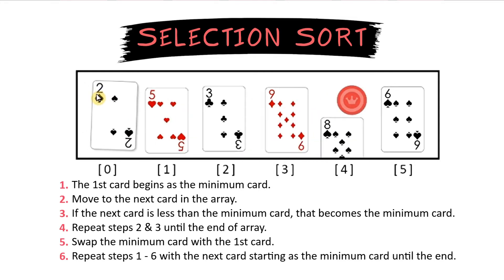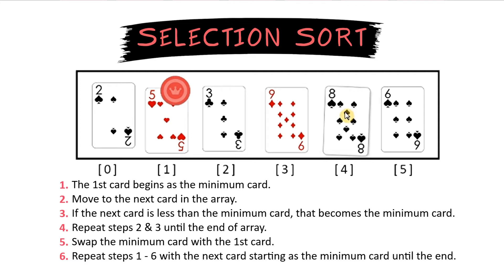So the 2 will swap with an 8 and now 2 is sorted. That is the smallest number. We selected the smallest number and put it at the beginning.